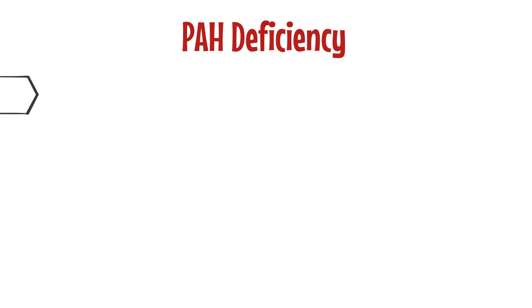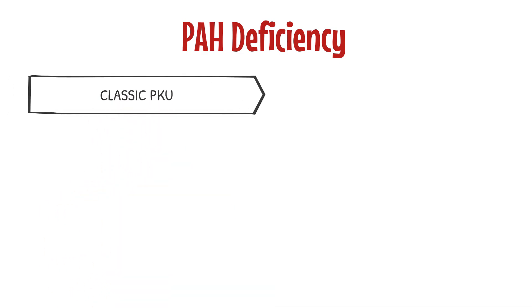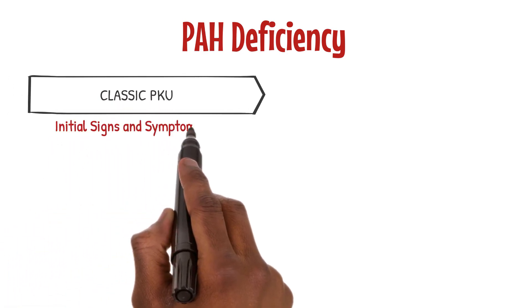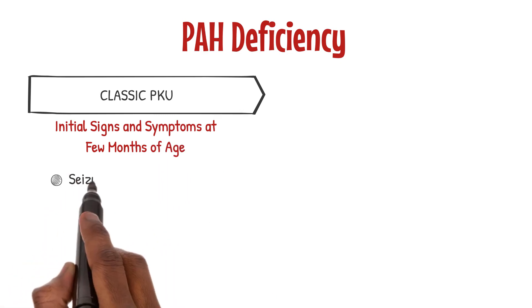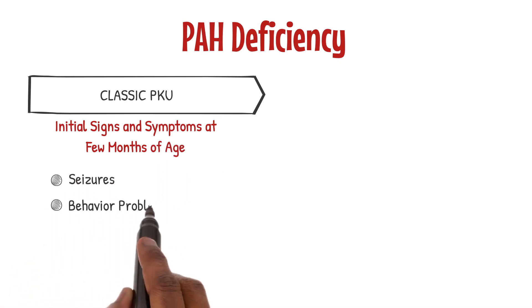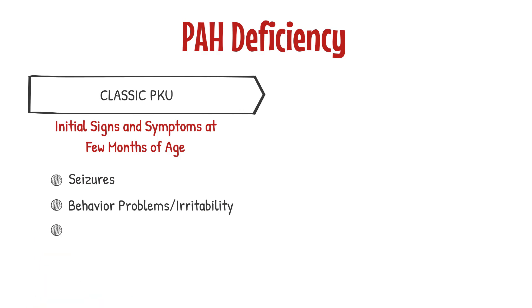The presentation of PAH deficiency is clinically variable and ranges from the most severe form, known as classic PKU, to benign hyperphenylalaninemia. In classic PKU, symptoms usually begin around a few months of life. Early symptoms include seizures, behavioral problems or irritability, eczema, a musty body odor, and lighter hair and skin than other family members.